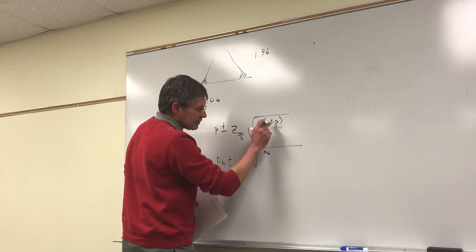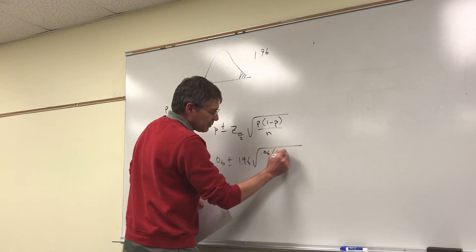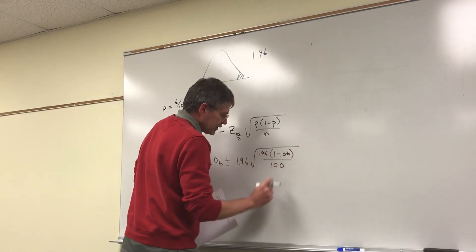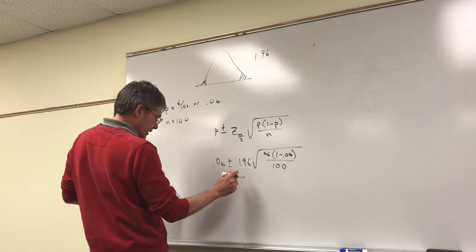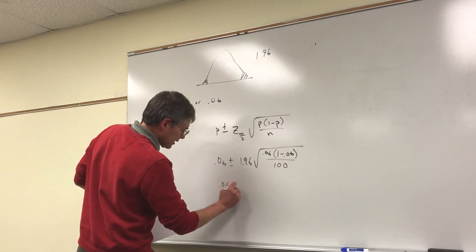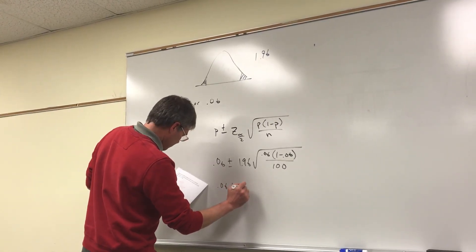Do all that math and I end up with 0.04654. So let's take p minus that: 0.0135, and p plus that: 0.1065.